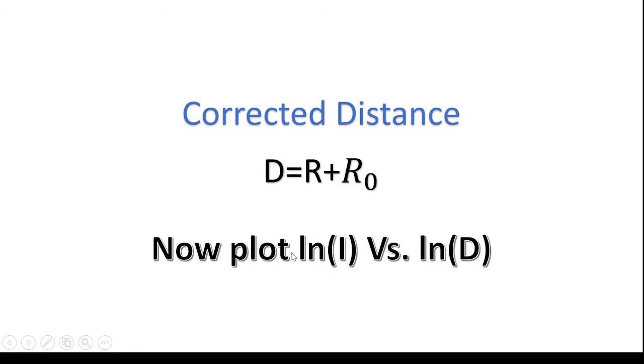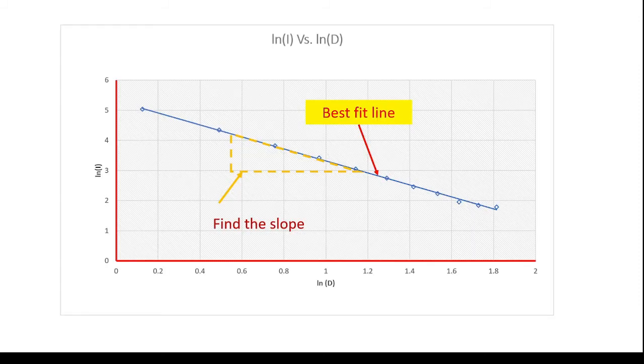Now we are going to plot natural logarithm of the intensity versus natural logarithm of capital D, the corrected distance. And when you do that, you will see that you will get a straight line which is the best fit line which will have a negative slope. So your experiment is basically to find out what is the slope of this particular curve.